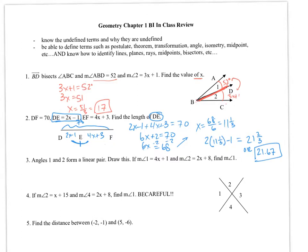So for number 3, it says angles 1 and 2 form a linear pair. So let's draw a linear pair. I'm just going to draw it like this, 1 and 2. I know that this word linear pair means they add up to be 180. Now if angle 1 is 4x plus 1 and angle 2 is 2x plus 8, I can add these two to get 180.